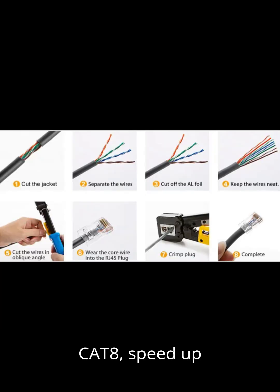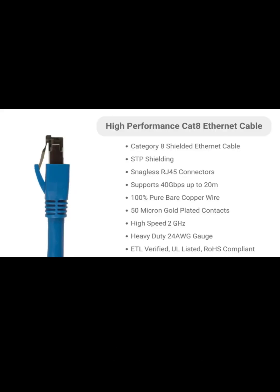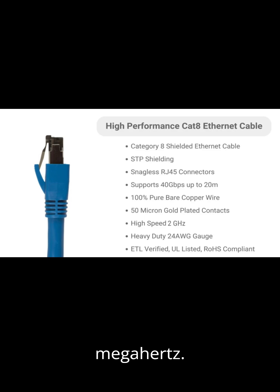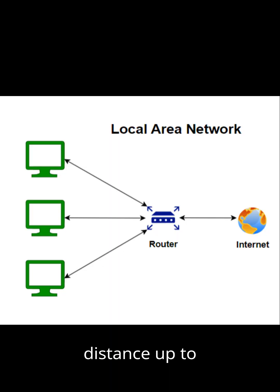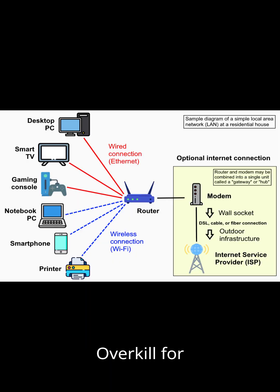6. CAT 8: Speed up to 25 to 40 Gbps, Bandwidth 2000 MHz. Best shielding, designed for data centers and servers. Very short distance — up to 30 meters. Overkill for normal home use.